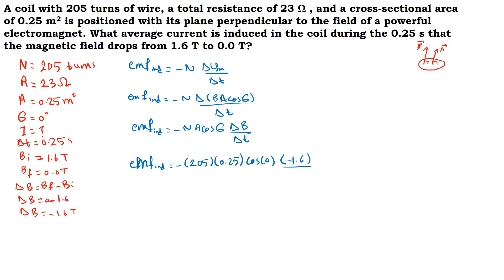ΔB which is negative 1.6 over Δt which is 0.25.